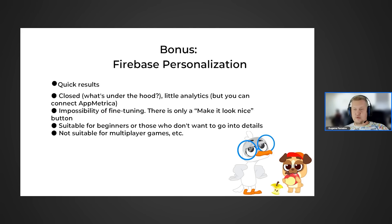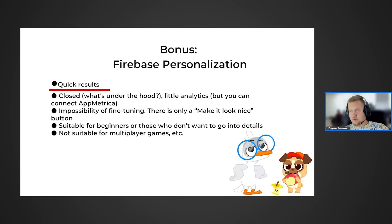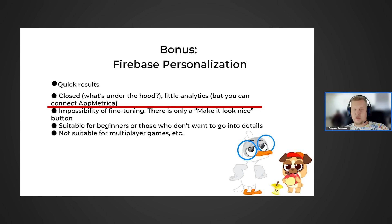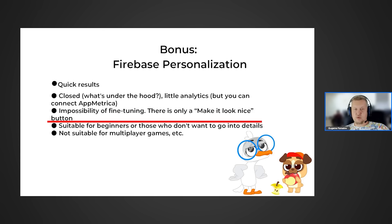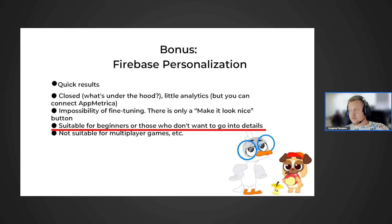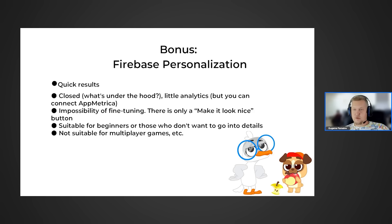Firebase Personalization is a tool that automatically applies the most optimal values for each user individually. It trains for 10 days and then reports that, compared to your baseline, it has increased revenue — for example, by 3.2% — by distributing different A-B testing variants to different user groups. The downside is it's a black box: we don't know which users were assigned to which variant, and there's no way to analyze that within Firebase itself. It's suitable for beginners who want quick results, but it's not suitable for multiplayer games. Overall, if you're fine with the restrictions, it's a really fast and cool tool for beginner developers.